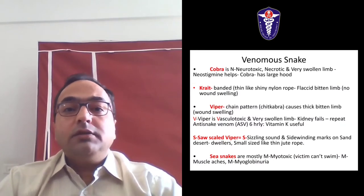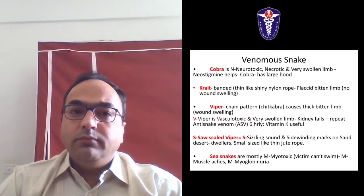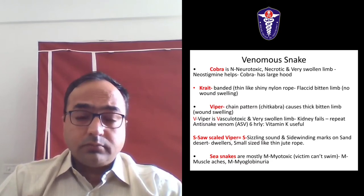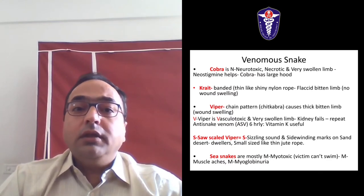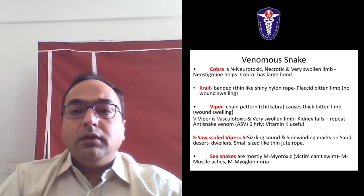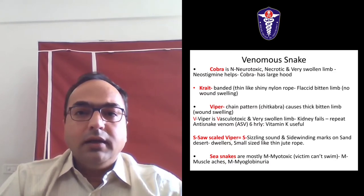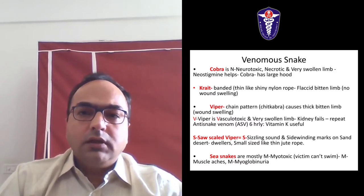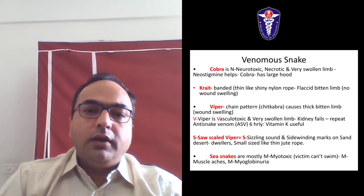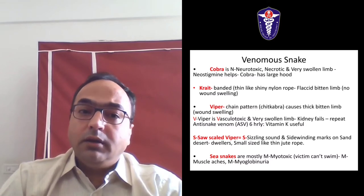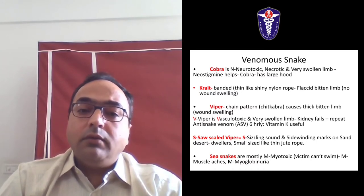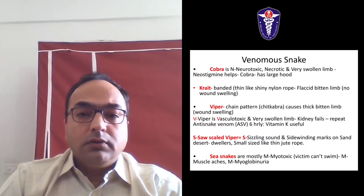Summarizing the venomous snakes: cobra is neurotoxic, causes necrosis and very swollen limb; neostigmine is the drug used along with anti-snake venom. Cobra has a large hood. Krait - they are banded or common krait, thin like a shiny nylon rope - causes flaccid bitten limb and paralysis, but the limb is not so swollen and there is no wound swelling. Viper has a chain pattern, causes thick swollen bitten limb and is vasculotoxic - causes kidney failure; anti-snake venom is given every 6 hours and Vitamin K can help achieve hemostasis.